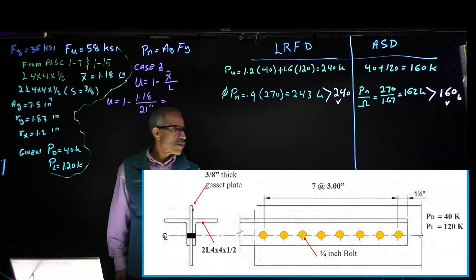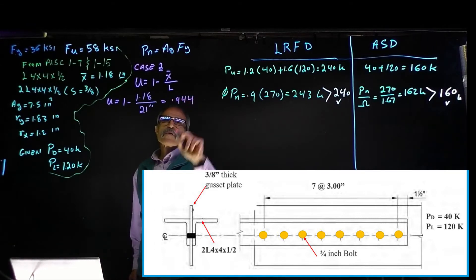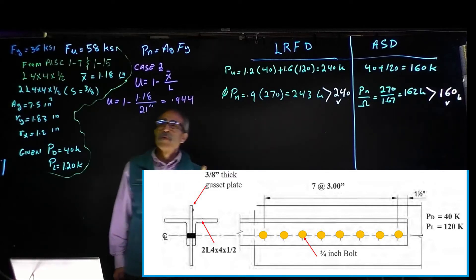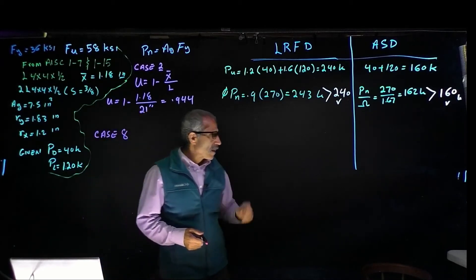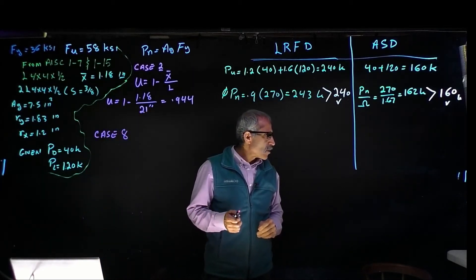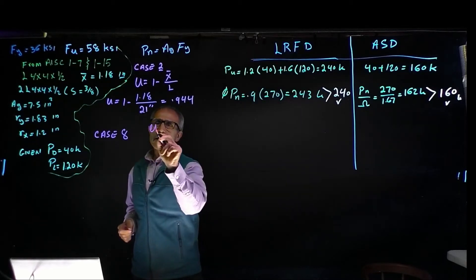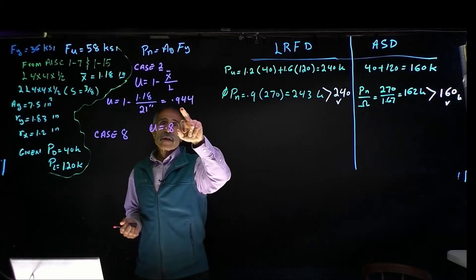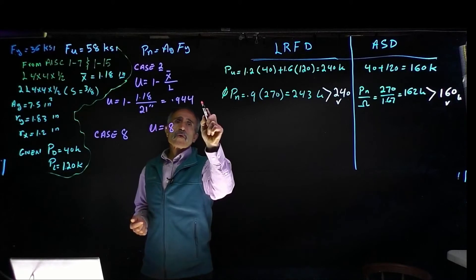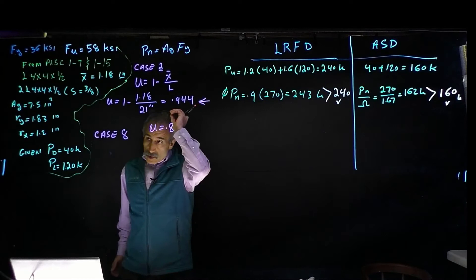Therefore our u is going to come out to 0.944. Now we'll double check case 8. In case 8, with 4 or more fasteners per line in the direction of loading, our u is 0.8. We have one at 0.944 and one at 0.8. The bigger one controls, so u equals 0.944.